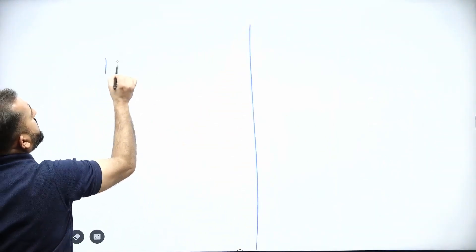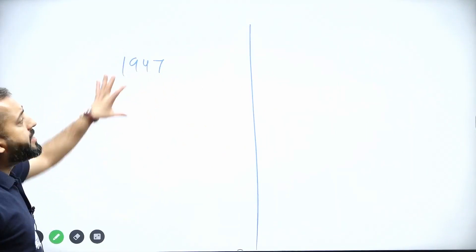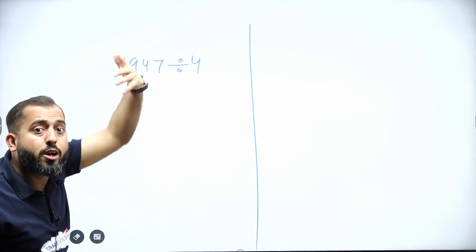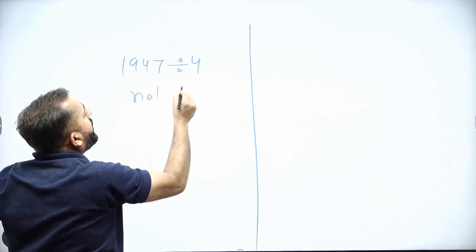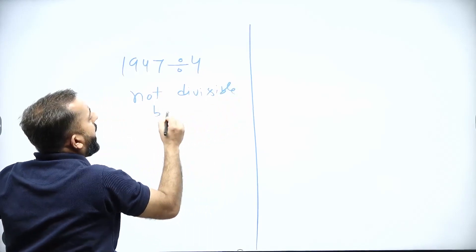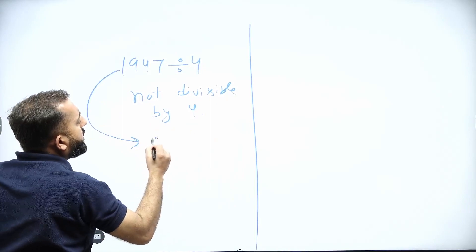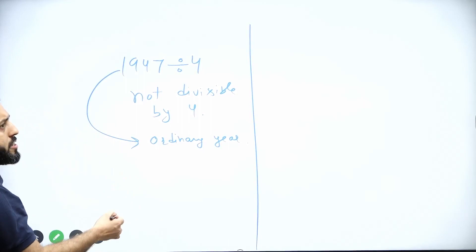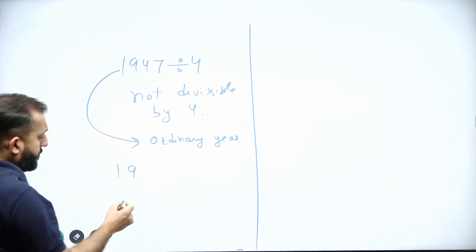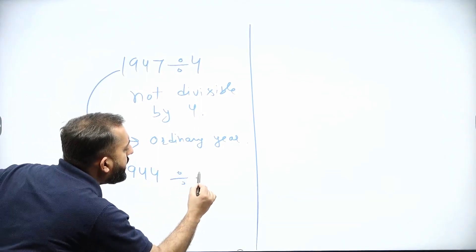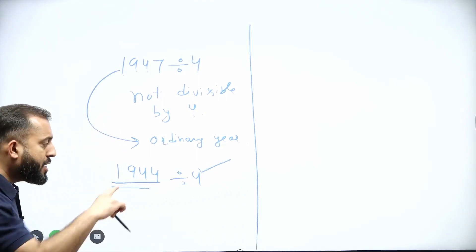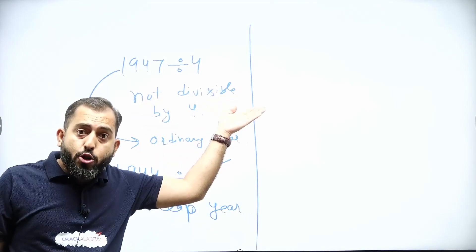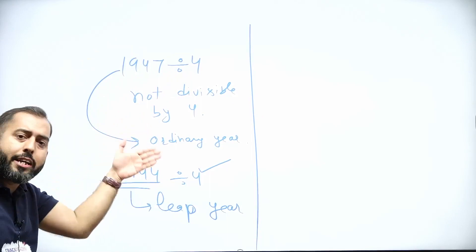For example, let's take the non-century year 1947. Since it's a non-century year, we divide by 4. Now, 1947 is not divisible by 4, hence it is an ordinary year. Let's take another non-century year — 1944. Is 1944 divisible by 4? Yes. So 1944 is a leap year. In the case of a non-century year, we divide by 4 to check whether the given year is a leap year or not.